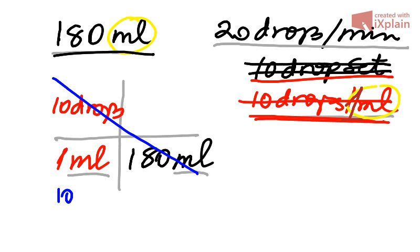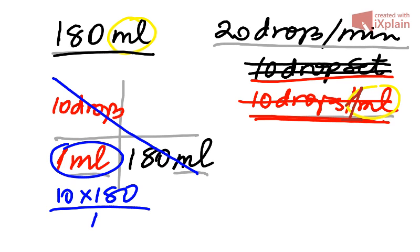10 times 180, and divide by the third number, 1. So basically, that's an easy one for us to do. 1,800, what's that? That means drops.